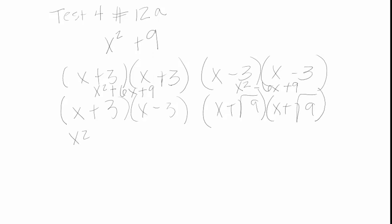Here you get x squared minus 6x plus 9. Here you get x squared minus 3x plus 3x minus 9, so you get x squared minus 9. Very close right there, but not correct.